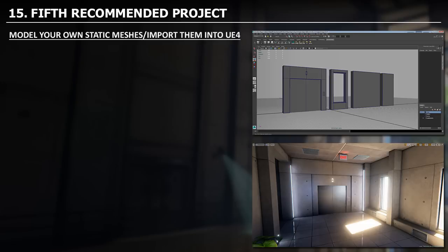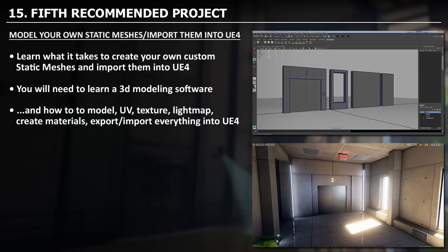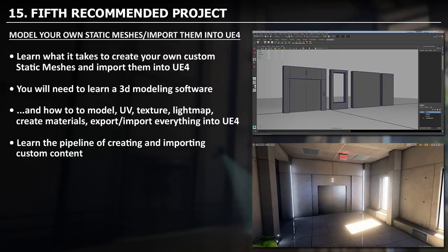Your fifth recommended project is to learn how to model your own static meshes and import them into Unreal Engine 4. For this, you will need to learn a 3D modeling software and all the required steps: how to model, UV, texture, create light maps, create materials, then export and import everything into Unreal Engine 4. Essentially, you are learning the full pipeline of creating and importing custom content.